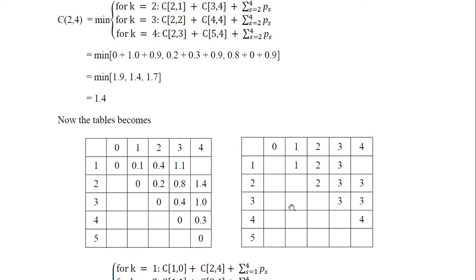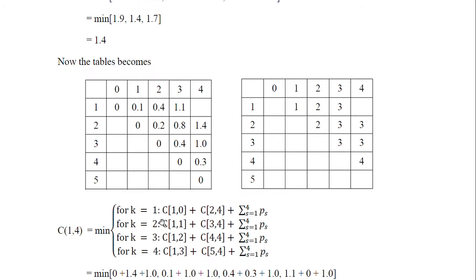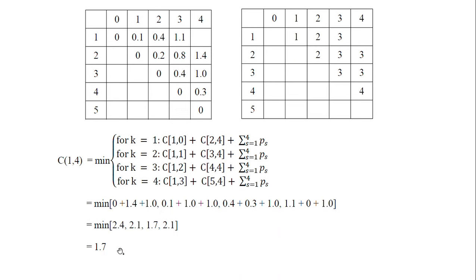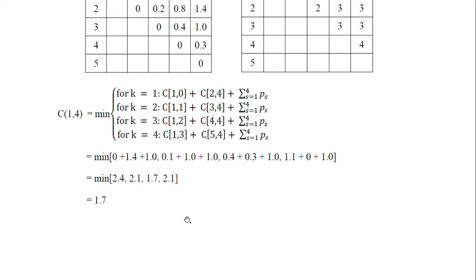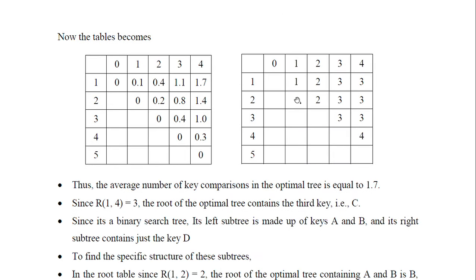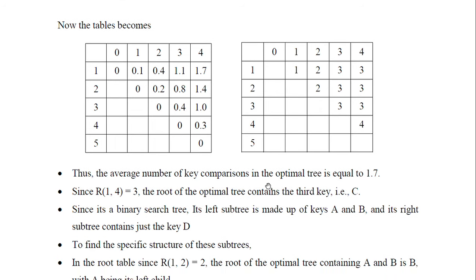Now we find C(1,4), where k ranges from 1 to 4. Applying the formula, the minimum value is 1.7, obtained for k=3. So C(1,4) = 1.7 and root table (1,4) = 3. The table is now half-filled — the other half need not be filled. The average number of comparisons when constructing the optimal tree is 1.7.